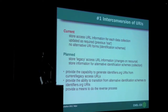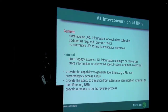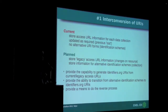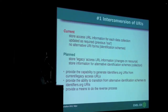Now moving on to our plans for the immediate future. The first is the interconversion of URIs. At the moment, we have resources where we store resolving locations, and because we want to keep those current with the most accurate live URL, when we update them — as they change sometimes quite often — we lose the previous legacy URL. So one thing we want to do is be able to store those legacy URLs. The other thing is that because different people use different identification schemes, we want to store alternative URI forms. Once we have that, we can provide the capability to transition across different access URLs and different identification schemes, and do the reporting as well.